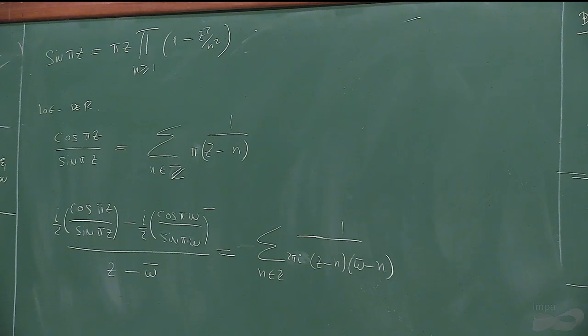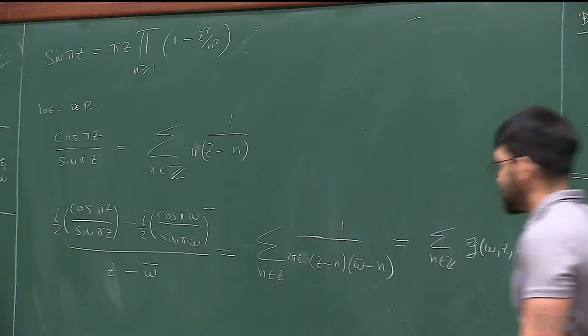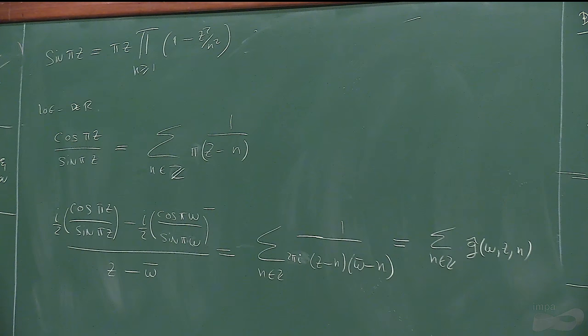Remarkably, the right-hand side is just a Fourier transform of the function G. So you can write the sum over n of G-hat(w, z, n). This is a very nice function: if you plot it, it decays like an exponential on both sides, with value 1/(z minus w-bar) at the origin. Poisson's summation should work for that function.